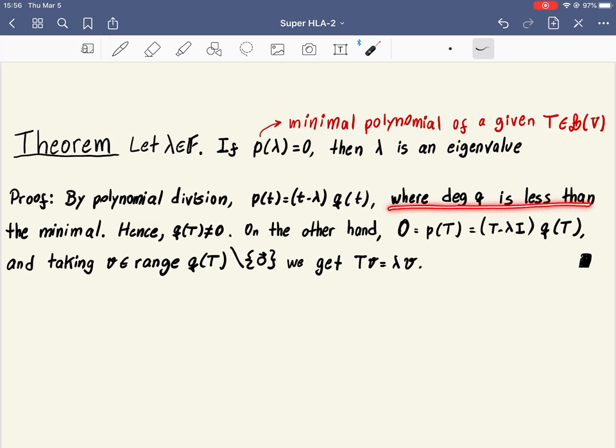That's what is written here, degree of q will be less than the minimal. Since q has degree less than the minimal, q of t cannot be zero. This would violate the property that if a non-zero polynomial satisfies this, the degree has to be higher than the minimum, because q is also a monic polynomial.